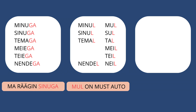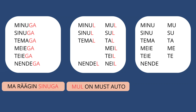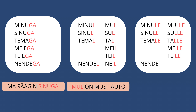Now let's see how to say 'to me', 'to you', etc. To express 'to' when referring to a person, you add the suffix 'le' at the end of the possessive. The forms are: 'minule', 'mulle' (with a double L), 'sinule', 'sulle', 'temale', 'talle'. Meie and teie again have only one form: 'meile', 'teile'. Then 'nendele', with the short form 'neile'.